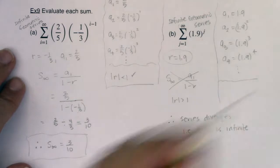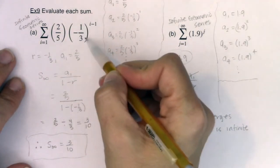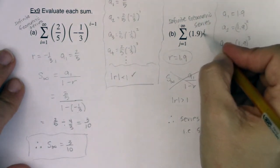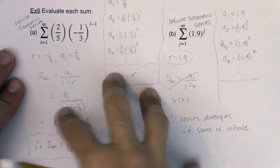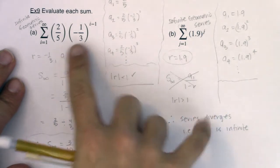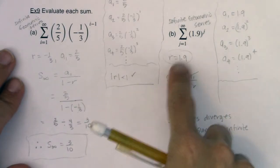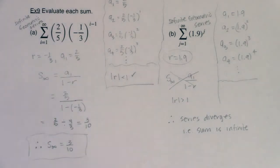We've got two sums in summation notation, both geometric. You can see the geometric in the exponential growth — here's a power where the variable is up in the exponent in both cases. In part a, the absolute value of r was less than 1 so we could apply the infinite sum formula and got 3/10. In part b, the absolute value of r was greater than 1 so the formula doesn't apply — that series is divergent. Next we'll try an annuity problem to close out section 9.4.